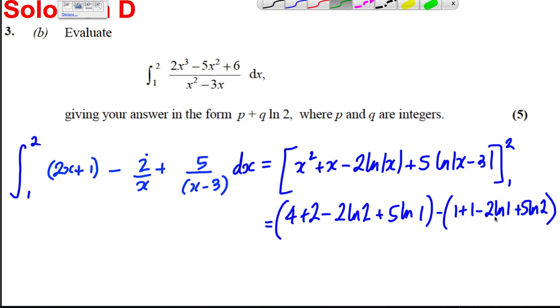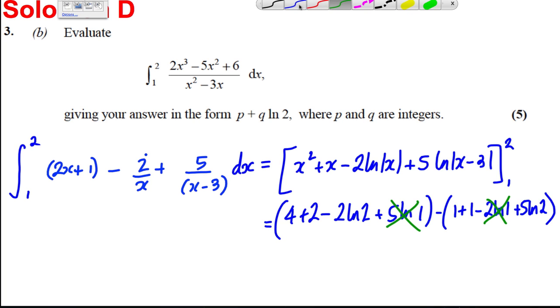Now let's just realize that ln 1's disappear, so those ln 1's are gone. We've therefore got 6, -2 ln 2, and then in this bracket we've got 2 here, so subtract 2 and subtract 5 ln 2.